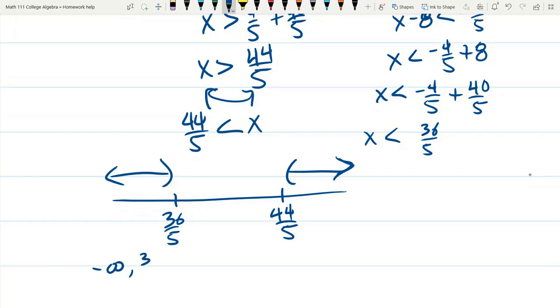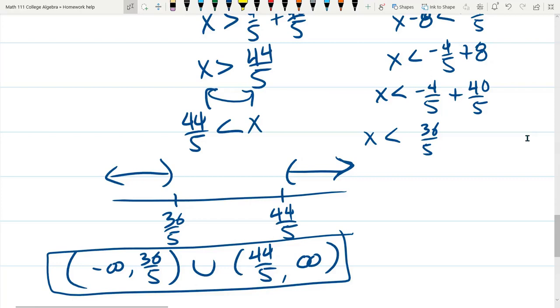Negative infinity comma 36 fifths union. And these are open because it was not equal, it was just less than. There was no equal underneath. Union 44 fifths comma positive infinity. So this would be the interval notation answer, which is not how this question asked for it. So let's go and turn this into the form the question's asked for. When you have two separate intervals, obviously x can't come from both intervals. X can't be less than 36 fifths and it cannot also be greater than 44 fifths.